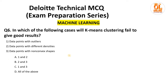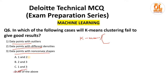The last question for today's video: in which of the following cases will k-means clustering fail to give good results? K-means is a very important algorithm — not just for Deloitte but for any major exam and even college exams. The three cases given are: data points with outliers, data points with different densities, and data points with non-convex shapes. The answer is all of the above — any of these three cases will cause k-means to fail to give good results.